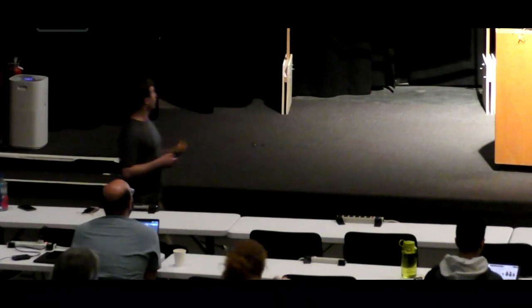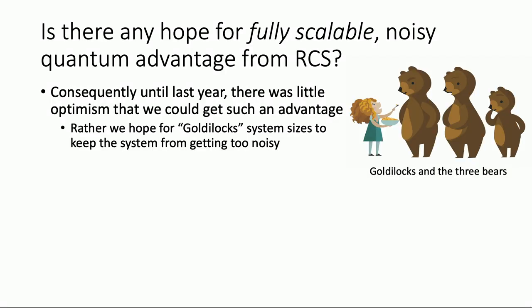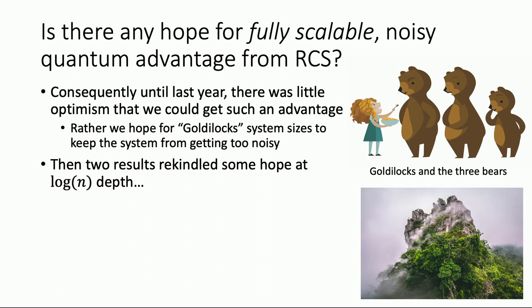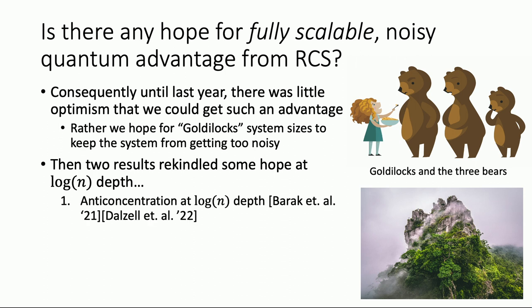Is there any hope for a fully scalable noisy quantum advantage from RCS? Until last year, we thought not — hence the Goldilocks solution, looking for the middle bear: not too deep, not too shallow. But then there are two new results from around 2022 that rekindled hope that at exactly log N depth, we could have a scalable advantage even with depolarizing noise. One of those results is anti-concentration at log depth, which is actually really surprising.